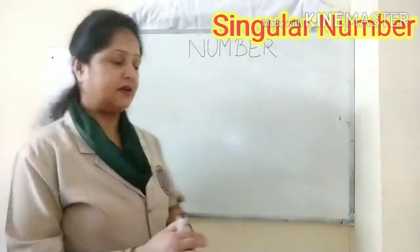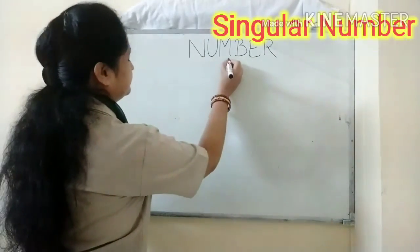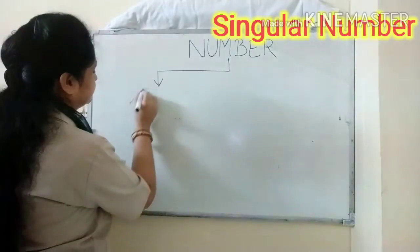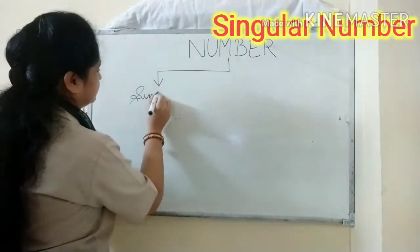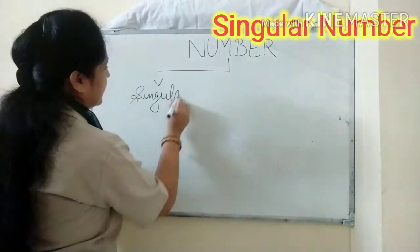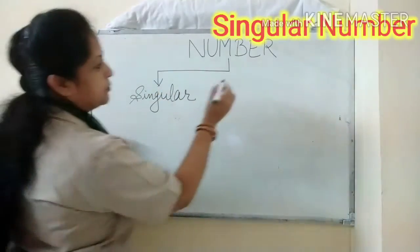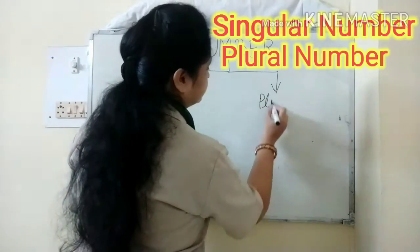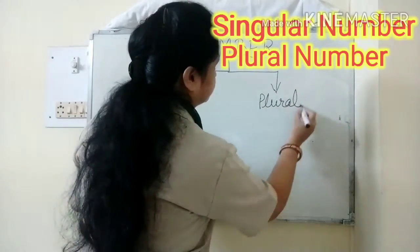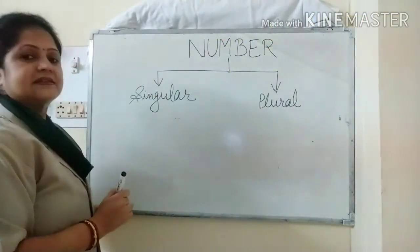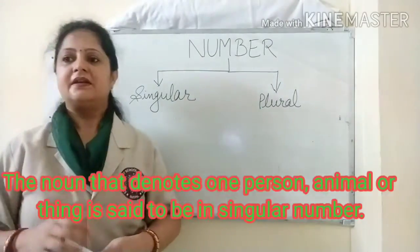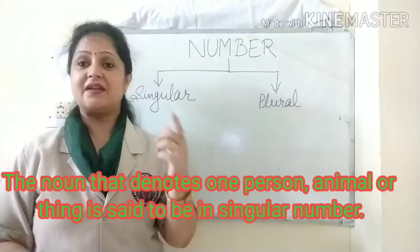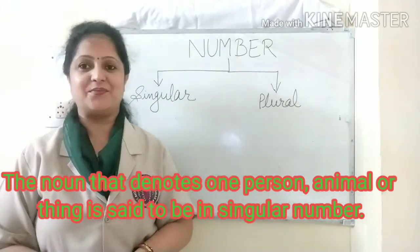There are two kinds of numbers. One is Singular Number, and the other is Plural Number. So what is Singular Number? The noun that denotes one person, animal, or thing is said to be in Singular Number.